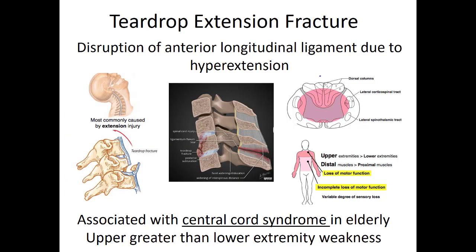The teardrop extension fracture involves interruption of one of the ligaments in the neck. It may be seen in elderly patients and causes central cord syndrome. These patients will also be complaining of neurological deficits. The deficits will be greater in the upper extremities than the lower extremities, and that asymmetry is one of the ways to recognize this type of injury.